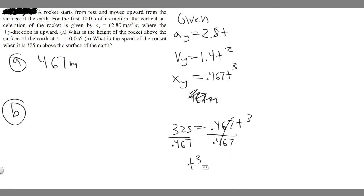And then what you can do is just cube root that number, because we have t cubed right here. If you cube root it, you'll get rid of it. So if you go ahead and take the cube root of 325 divided by 0.467, you'll get 8.861 and so on. I'm going to go ahead and round to 8.86.